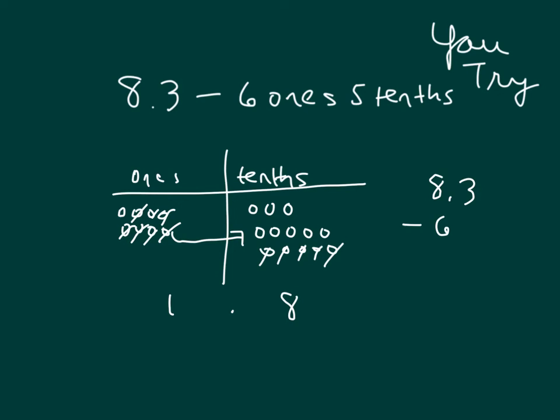Did you write the numbers correctly? 8 becomes a 7, 3 becomes 13, 13 minus 5 is 8, and 7 minus 6 is 1. So our numbers approach matches our place value approach. This problem did involve regrouping.